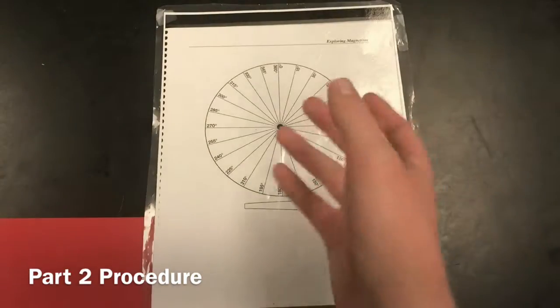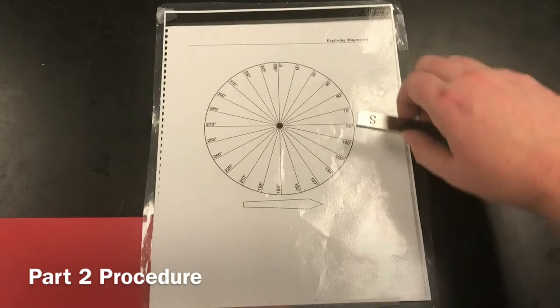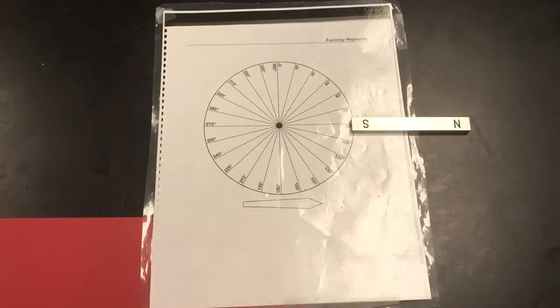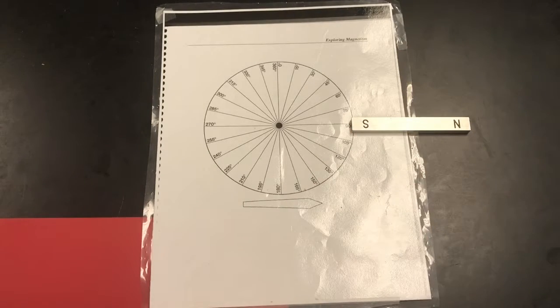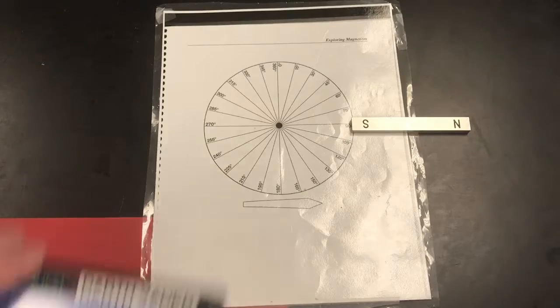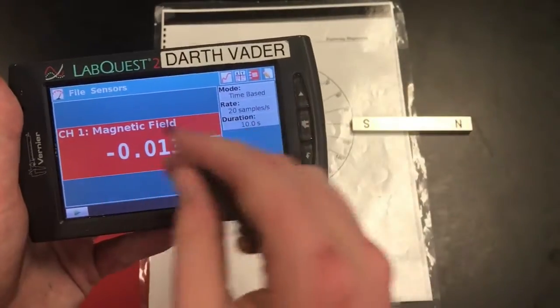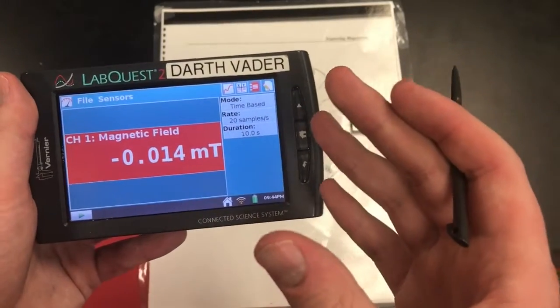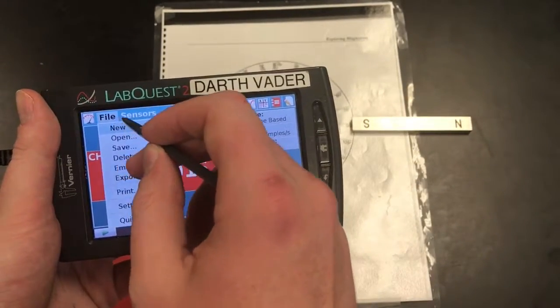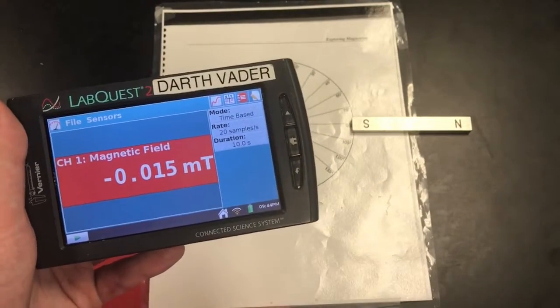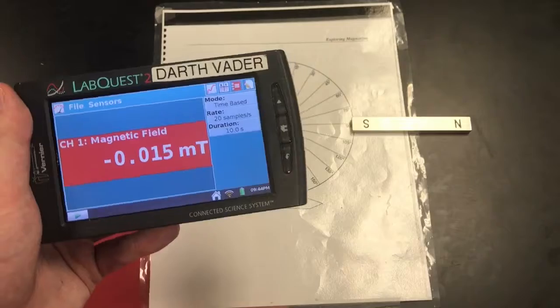For part two, we're going to use this degree wheel. First thing I want you to do: set the south end of the magnet at 90 degrees. On our LabQuest, make sure you're back on this home screen. You're probably going to have to clear out of the last trial you did. You can go file new and you're going to want to discard that last experiment as long as you have it on graphical analysis.